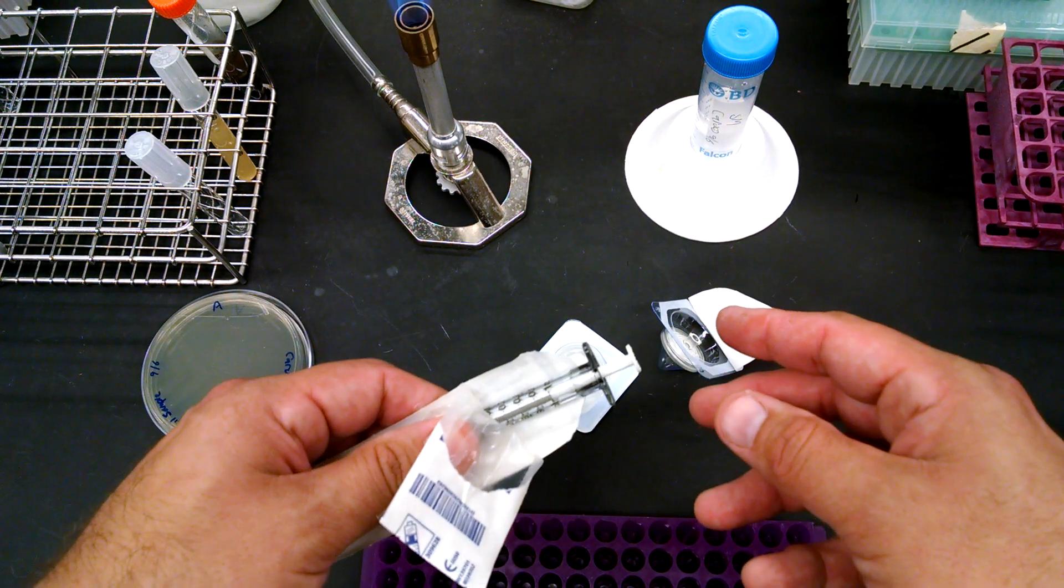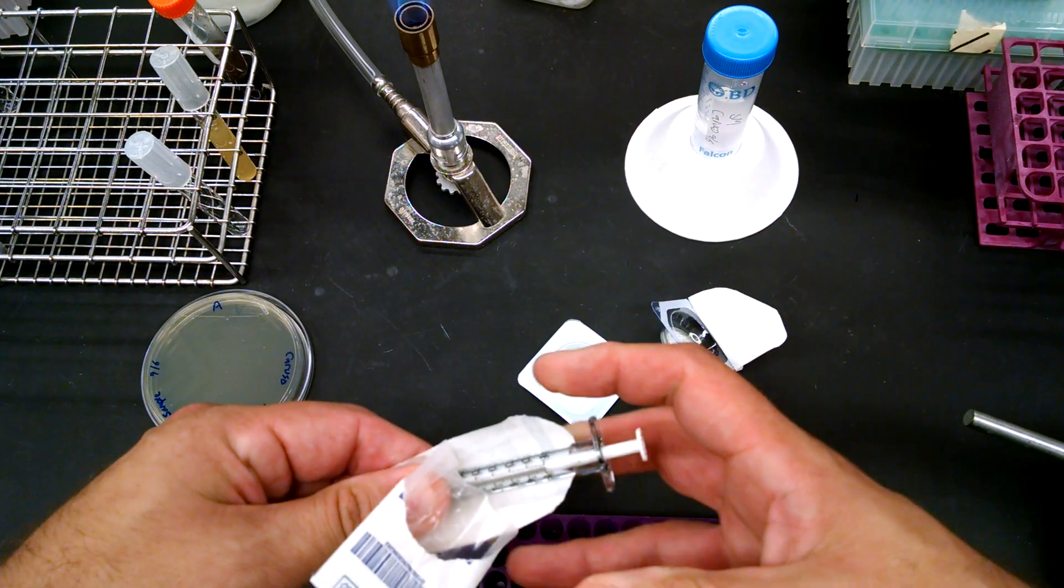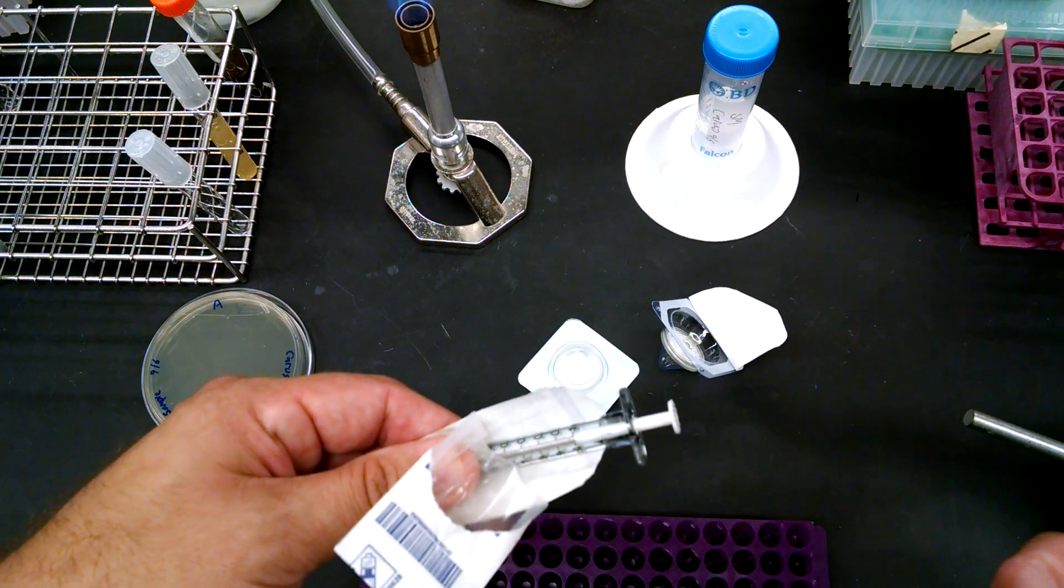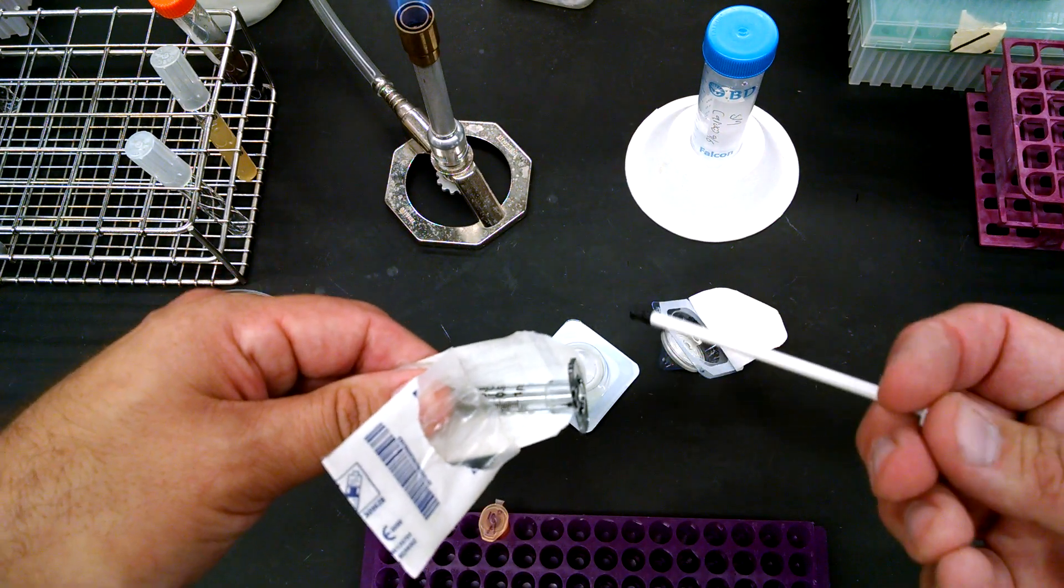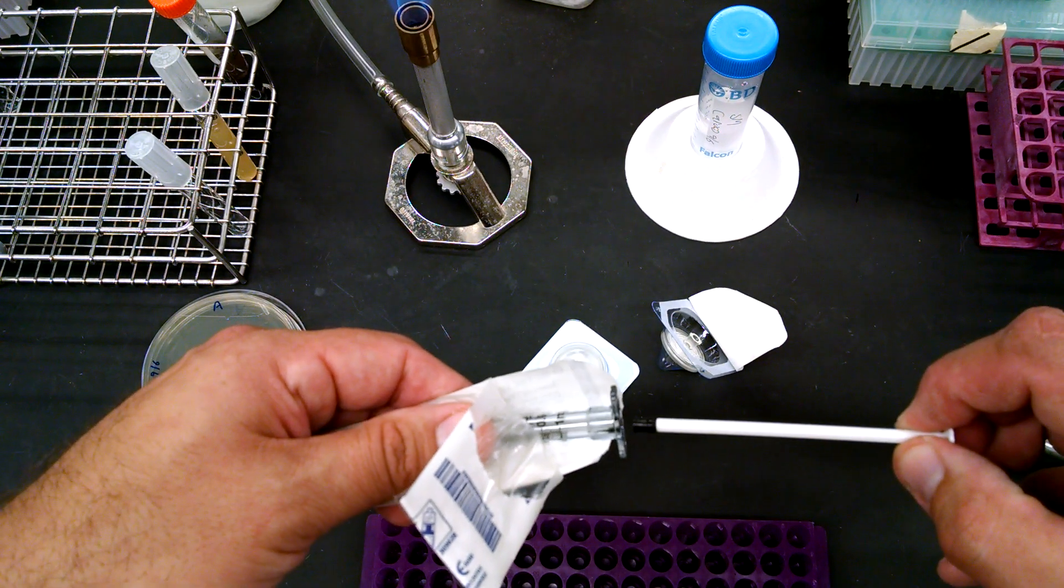What you don't want to do is attach it to the filter right away and then yank out the plunger because that'll put negative pressure on the filter and it'll rip a hole on the filter. Never have this attached to the filter and then pull out the plunger. Whenever you're going to attach it to the filter, make sure you take the plunger out first.